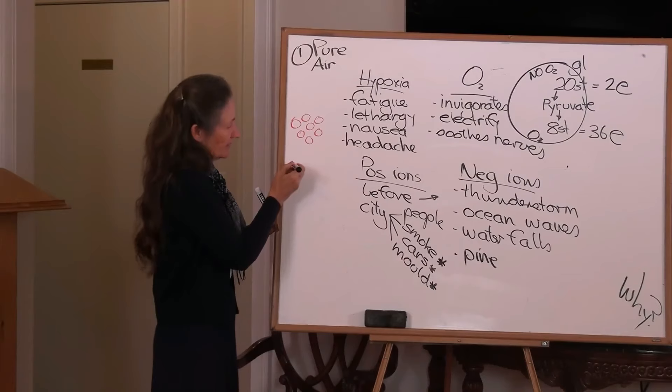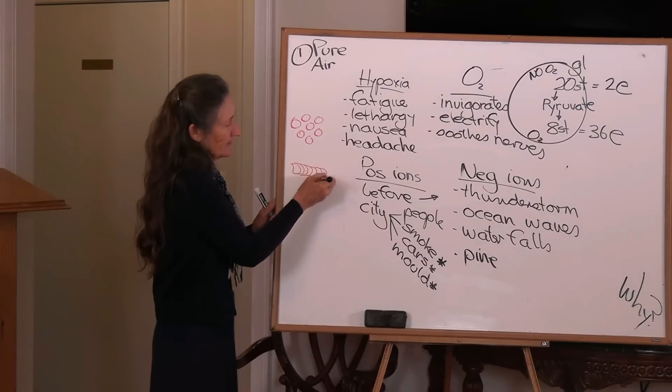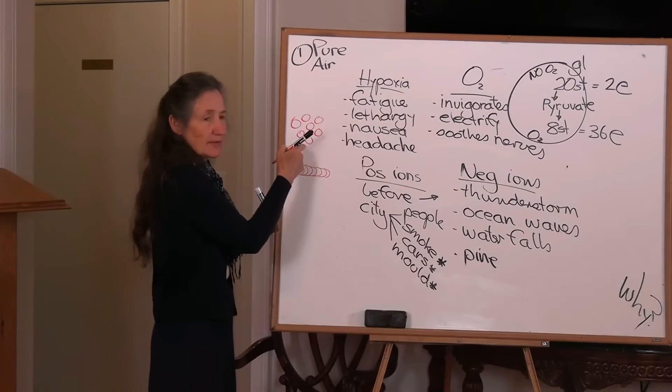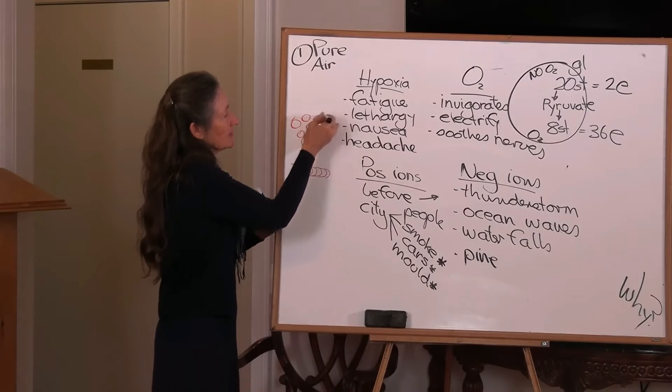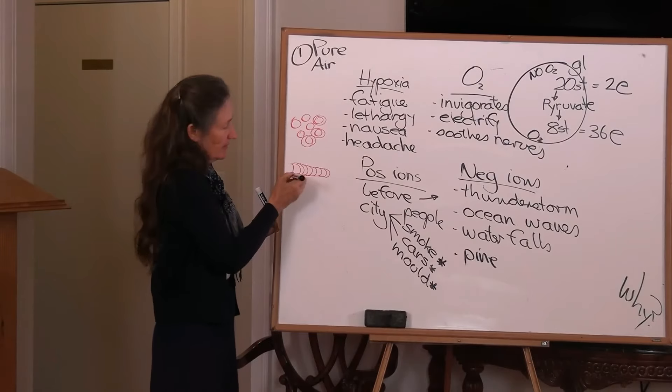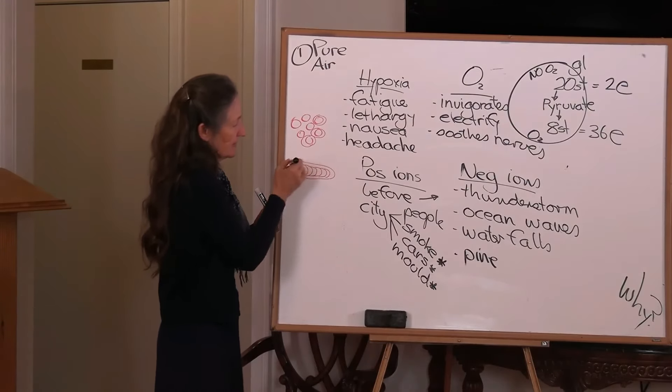But if someone's dehydrated, the blood cells clump. It's actually called roulette. Now when those blood cells go through the lungs, they pick up oxygen like little parcels. When this goes through the lungs, how much oxygen is it picking up?